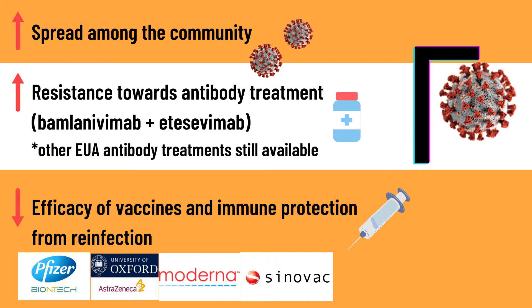Current available vaccines are still effective in preventing the serious complications of COVID-19, including hospitalizations and deaths, with a slight reduction in efficacies. Vaccines not listed by no means signifies non-efficacy, but rather due to limited available data. Vaccines listed also by no means signifies lesser efficacy than non-listed vaccines, but rather due to the available data from studies conducted. Therefore, although current vaccines have reduced efficacies, two doses of these vaccines are still effective against the gamma variant with more than 50% efficacy, which is the efficacy cutoff point set by the Food and Drug Administration.